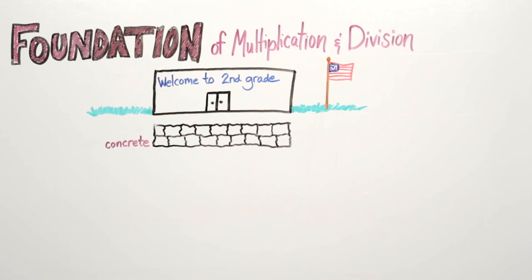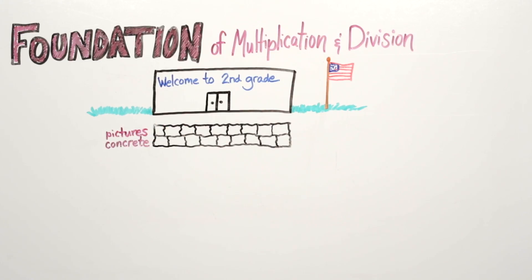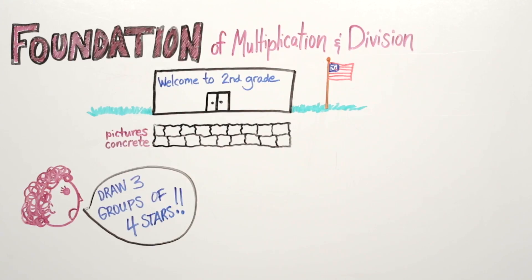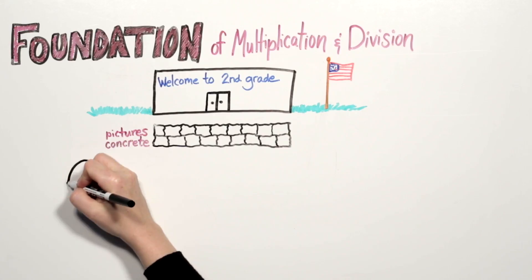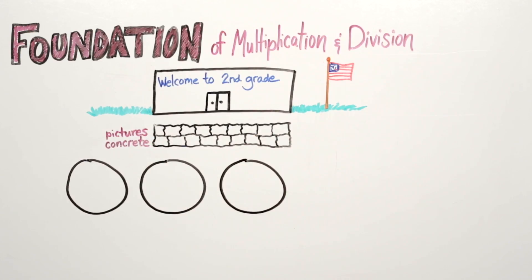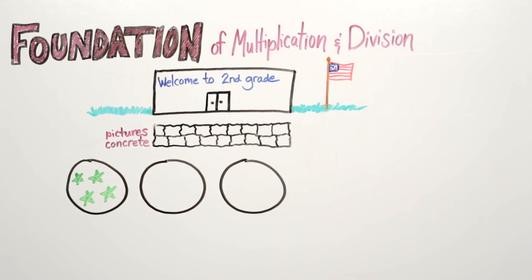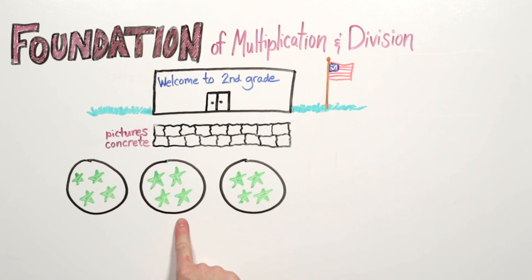Next, your child will move into the picture level of understanding. Say, draw me three groups of four stars. Your child will draw one, two, three groups. Group one has one, two, three, four stars. Group two has four stars. Group three has four stars. Now we have three equal groups of four.